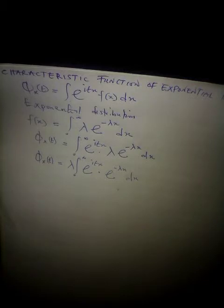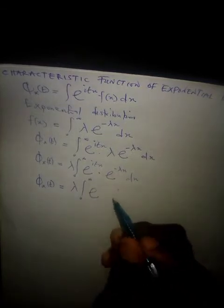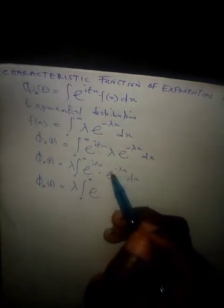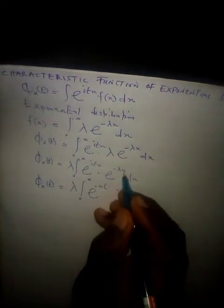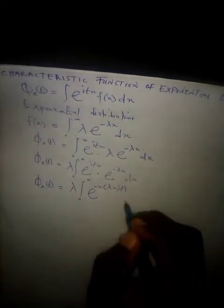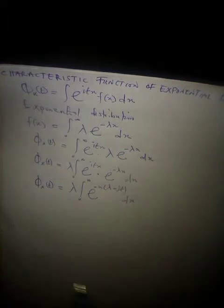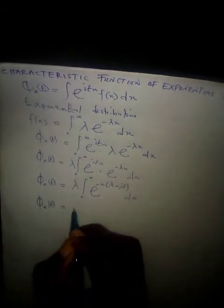We can combine these two exponentials together using the law of indices. So phi of x of t equals lambda times the integral from zero to positive infinity of exponential, with x common to both terms, raised to the power minus x times the quantity lambda minus i theta t dx. This is the expression we now need to integrate.